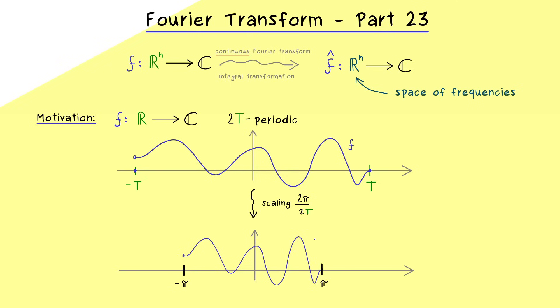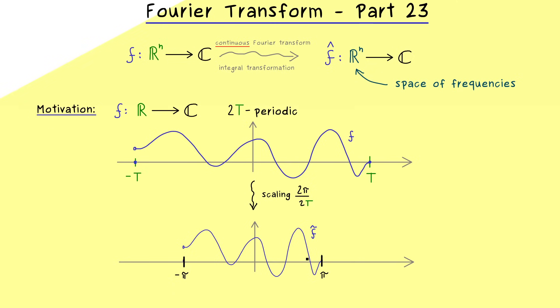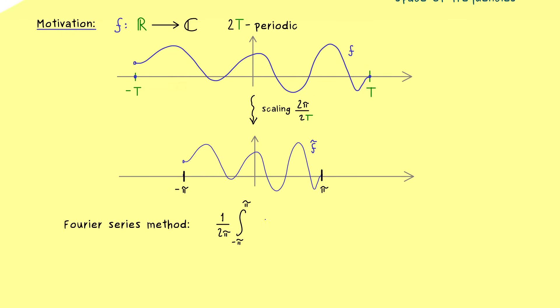So maybe we should give this function a new name, let's call it f tilde for the moment. And now let's calculate the Fourier coefficients for this new function f tilde. And there you already know we just have the integral from minus π to π of the function e to the power minus ikx. And then we just multiply this by f tilde of x. So these are the Fourier coefficients of f tilde, but of course we want to go back to our original function f defined from the interval minus T to T.